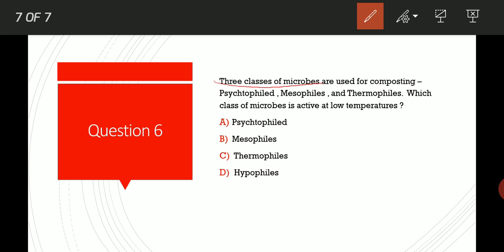Which class of microbes is active at a low temperature? Now they are asking us, there are three types of microbes present and are used for composting: Psychrophiles, Mesophiles, and Thermophiles. Now out of these three, which one of the microbes is used at a very low temperature or is active at low temperature? Option A: Psychrophiles. Option B: Mesophiles. Option C: Thermophiles. Option D: Hyphophiles. The correct option is Option A, Psychrophiles.